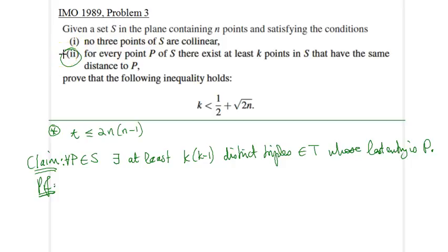The proof of this claim is again very straightforward and it follows the second condition of the problem. We know that there are no fewer than K points in S that are equidistant from P. Therefore, given our point P here, we know we have at least K points equidistant from P. The first entry can be chosen in at least K different ways, and there are K minus 1 other points remaining for the second entry. We know all these entries are different.